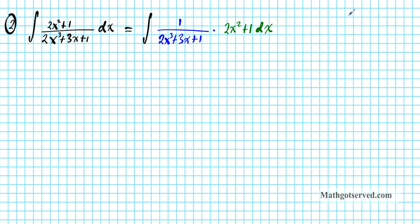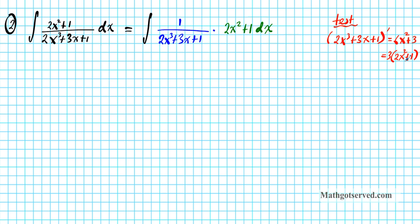Let's do the test. If we differentiate the inner function of this composite — the cubic 2x cubed plus 3x plus 1 — we get 6x squared plus 3. Can we express this as a multiple of 2x squared plus 1? Yes — factoring out the GCF of 3 gives 3 times 2x squared plus 1, which is exactly our other function. So this passes the test for u-substitution.